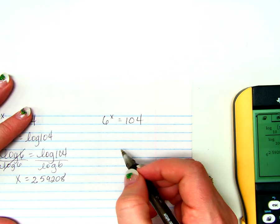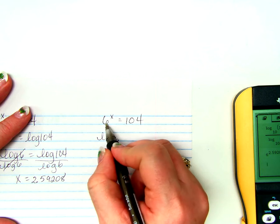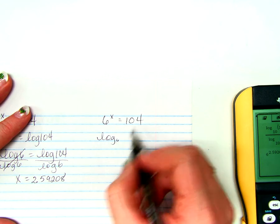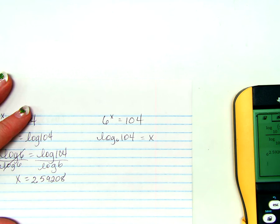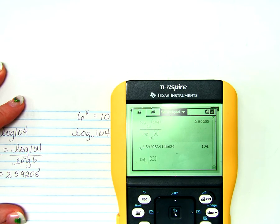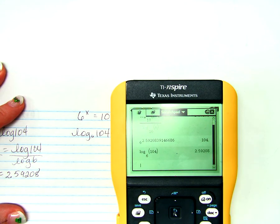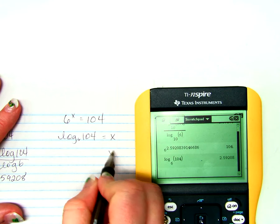If I wrote this in logarithmic form, we'd have log base 6, base of the exponent is the base of the log, of the argument equals the exponent. Log base 6 of 104, we'll look in our calculator. Log base 6 of 104. Look at that. Same exact answer, way fewer steps.